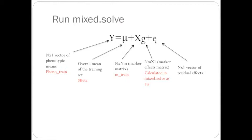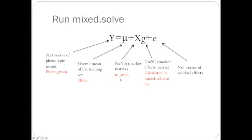And then e is a vector of residual effects. So to input into rrBLUP, we input the phenotrain and the marker train. So to run the code for rrBLUP, the first trait is yield.